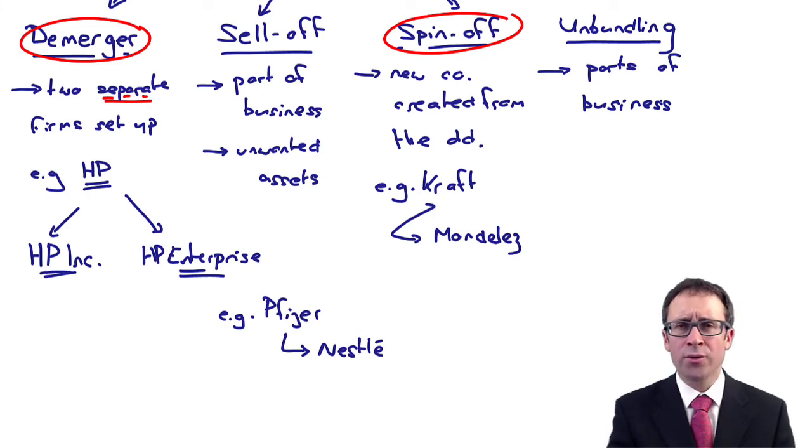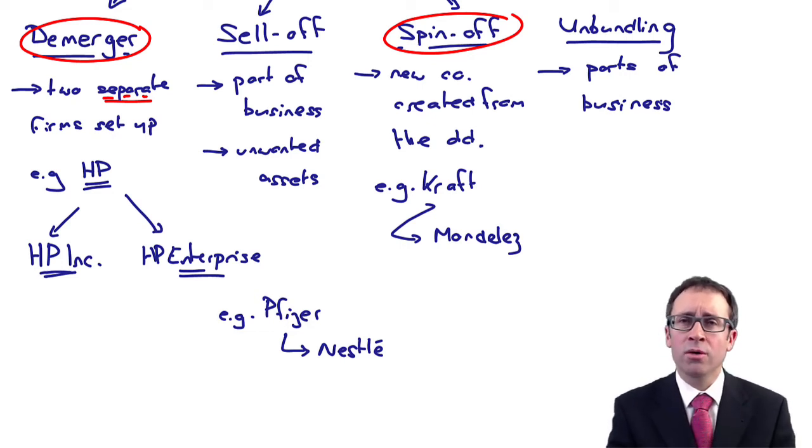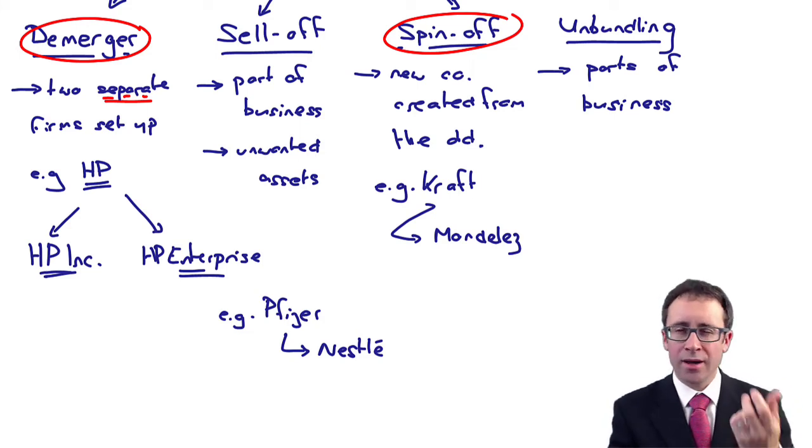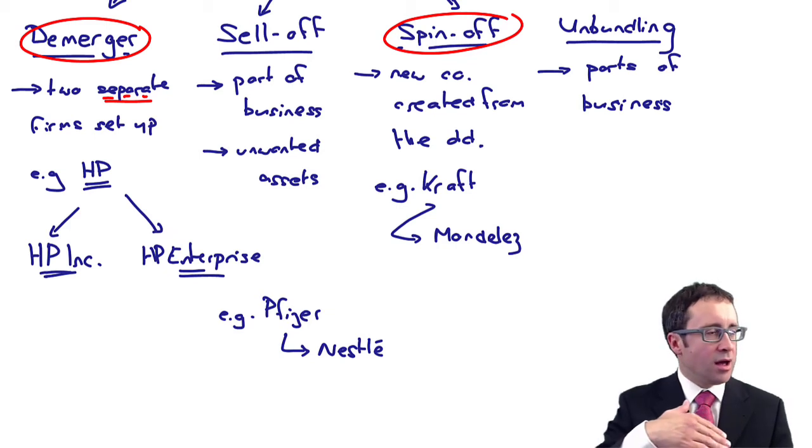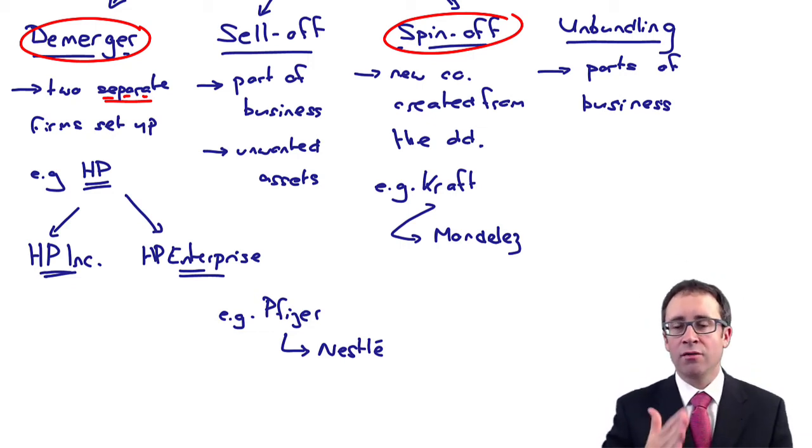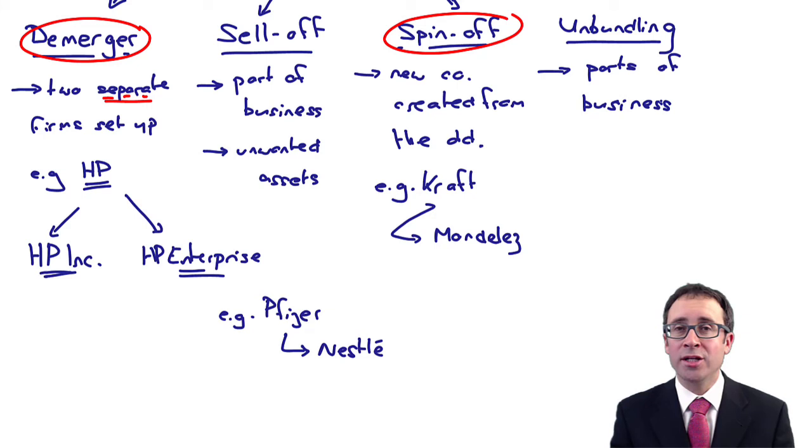These divestments will be subject to the competition commission, so that needs to be thought of as well. But those are the four main areas that you need to be familiar with regarding divestment. Make sure you read the study text. There'll be huge amounts of detail. Don't forget to have a play around with the questions to get a flavour of how this is examined. There's not going to be any numbers. It's going to be narrative-style questions, qualitative aspects where you're given a scenario and use that scenario to work out what type of divestment it is.